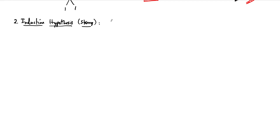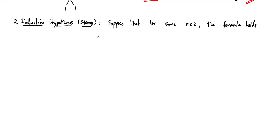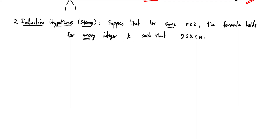Our strong hypothesis is: suppose that for some n greater than or equal to 2, the formula holds for every integer k such that 2 is less than or equal to k, less than or equal to n. This is the strong hypothesis because we choose some n, but the strong part is that the formula holds for every integer between 2 and n.